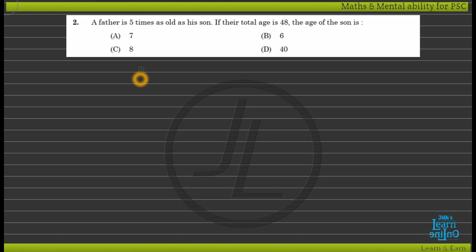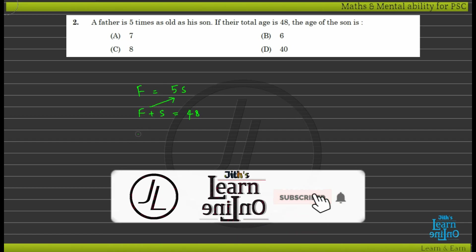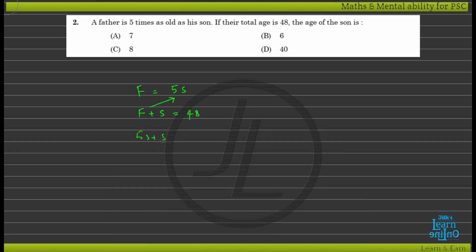If x is the age of the son, the father's age will be 5x. The total age is 5x plus x equals 48. So 6x equals 48, giving the son's age.